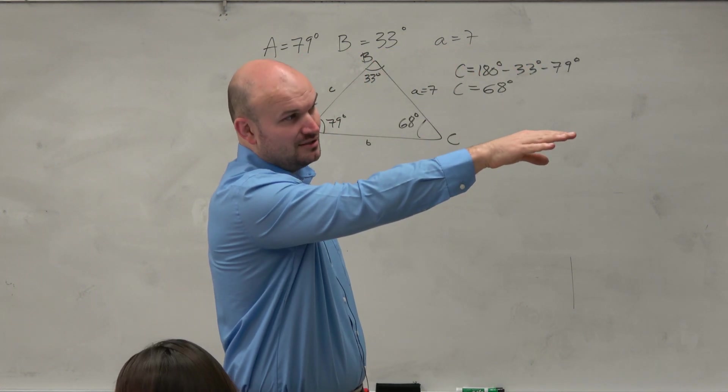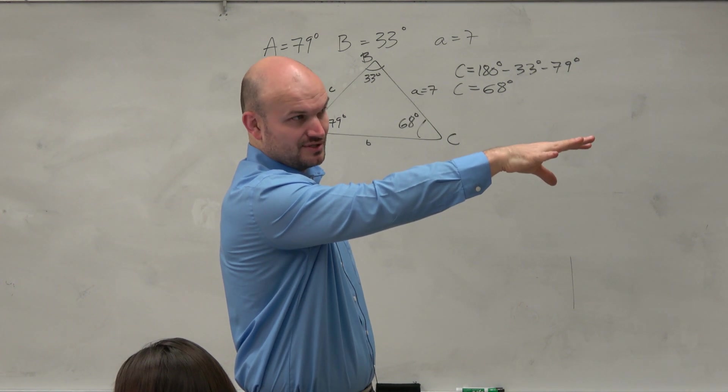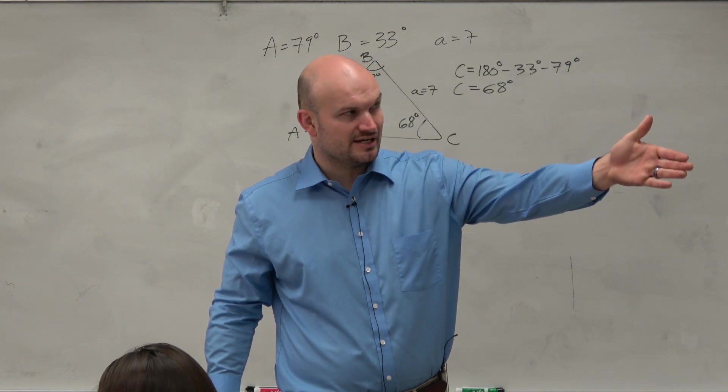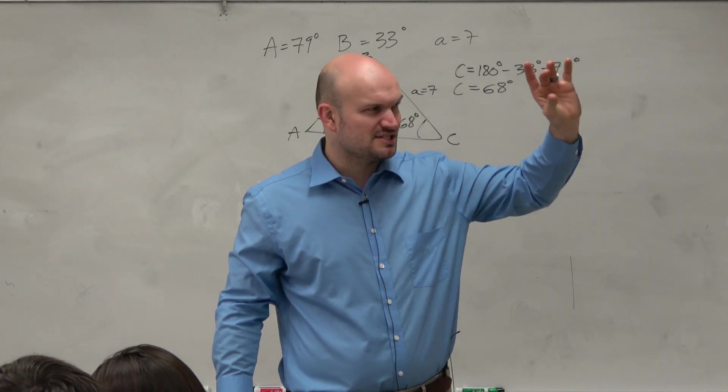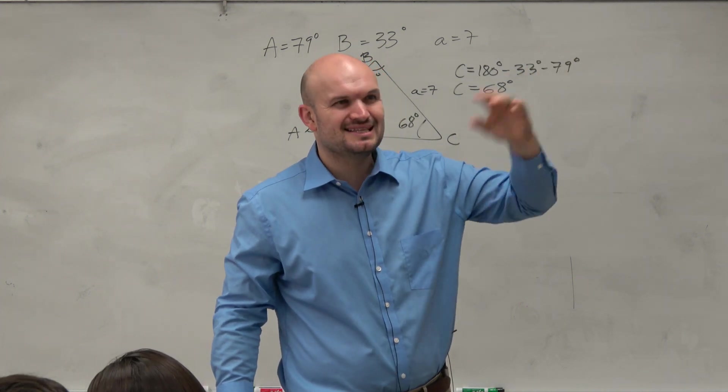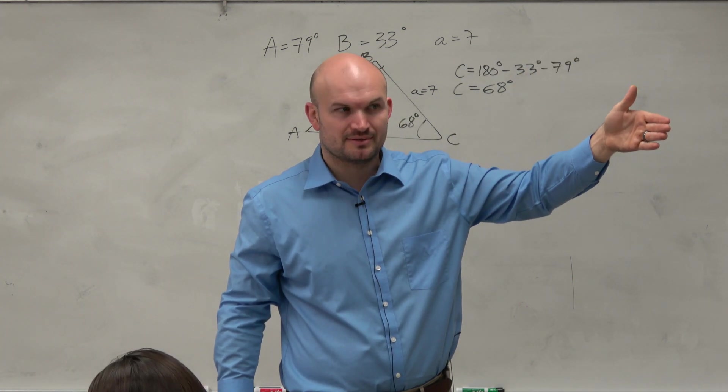If you're solving for an angle, do the first ratios. If you're solving for a side, do the second ratios. The reason being is you want to solve for whatever's in the numerator. When it's in the denominator, you have to do an extra step.